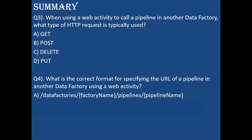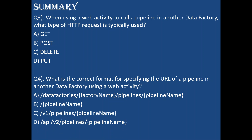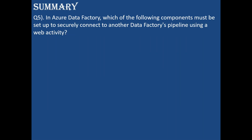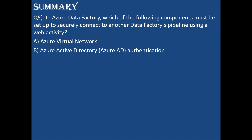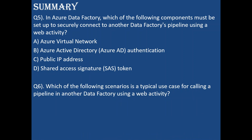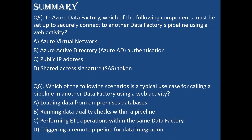Q4: What is the correct format for specifying the URL of a pipeline in another data factory using a web activity? Answer A is correct — you use the management.azure.com format with data factory name and pipeline name. Q5: Which component must be set up to securely connect to another data factory pipeline using a web activity? Answer B: Azure Active Directory authentication (managed identity). Q6: What is a typical use case for calling a pipeline in another data factory? Answer D: triggering a remote pipeline for data integration.